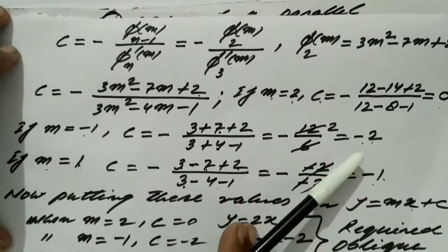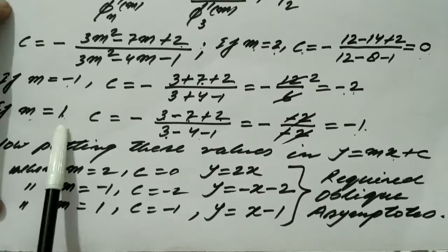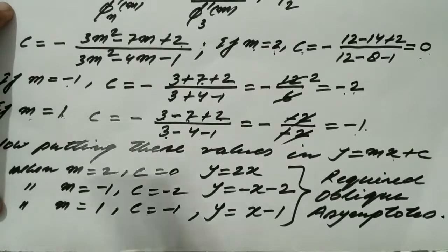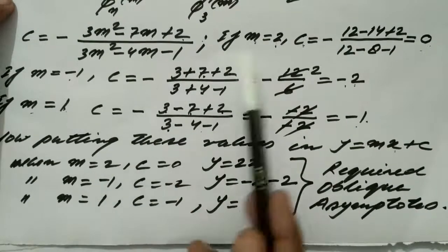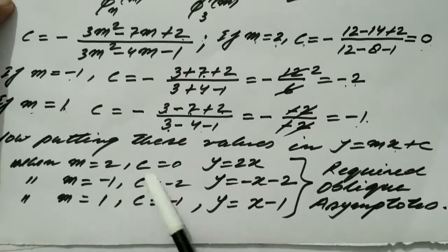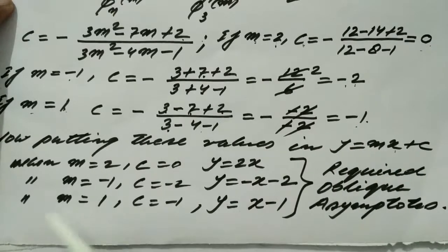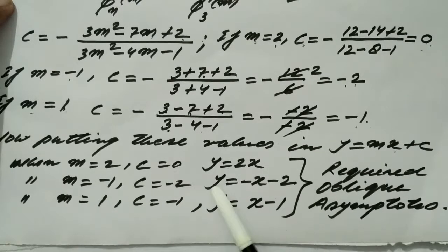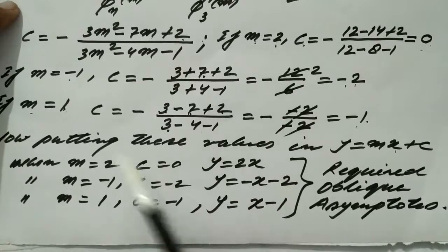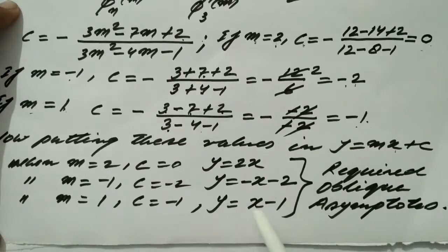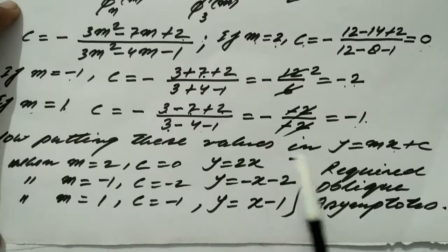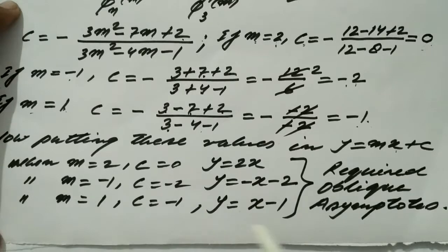Now substituting all values of m and c into y = mx + c: when m = 2, c = 0, we get y = 2x; when m = −1, c = −2, we get y = −x − 2; when m = 1, c = −1, we get y = x − 1. These three straight lines are the required oblique asymptotes of the curve.